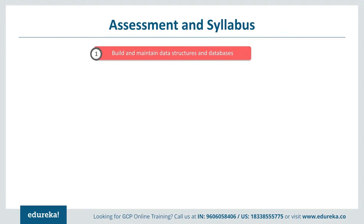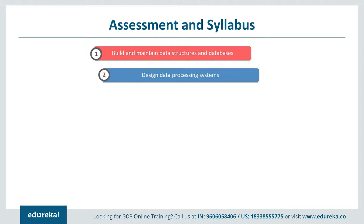The syllabus for the Professional Data Engineer certification starts with building and maintaining data structures and databases. This includes future advances in data technology, changes to business requirements, awareness of the current state and how to migrate the design to a future state, data modeling trade-offs, and schema design. The second section is designing data processing systems.